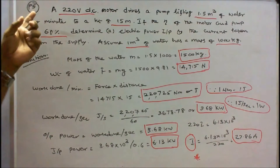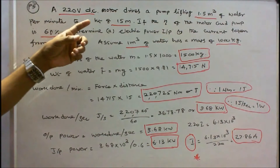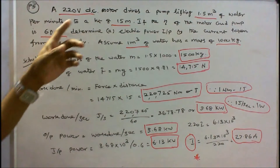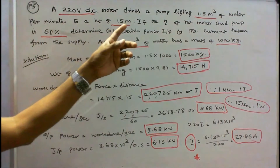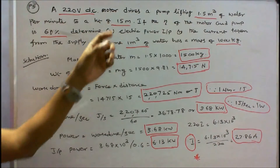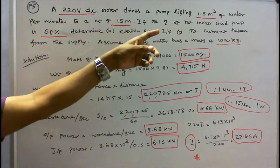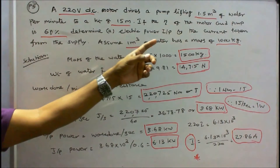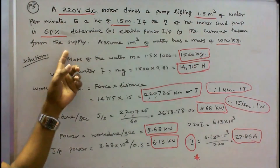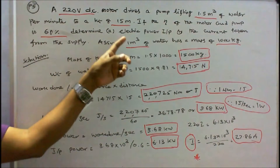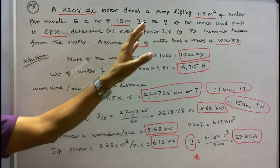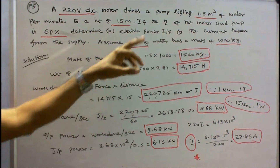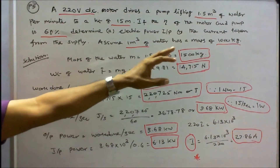Problem 5: A 220 volt DC motor drives a pump lifting 1.5 cubic meters of water per minute to a height of 15 meters. If the efficiency of the motor and pump is 60%, determine: A) electric power input, B) the current taken from the supply. Assume 1 cubic meter of water has a mass of 1000 kg. Mass of water M is equal to 1.5 into 1000, that is 1500 kg.